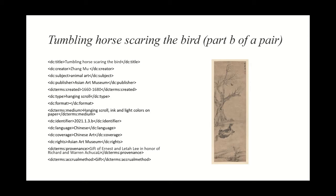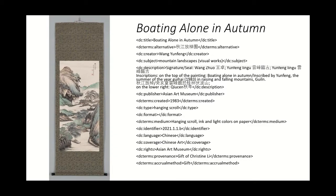At the bottom, I mentioned provenance and the importance of provenance and accrual method. As you can see, it was a gift — a gift of Ernest and Leta Lee in honor of Richard and Warren Achukuk Lee. The next painting is 'Boating Alone in Autumn.' Again, we have that alternative title and we have the inscriptions under the description area.